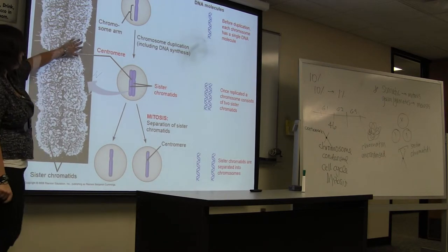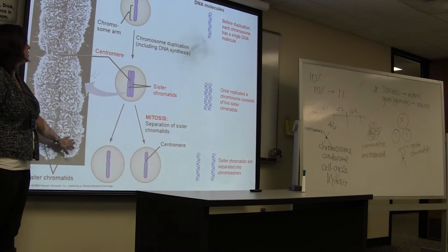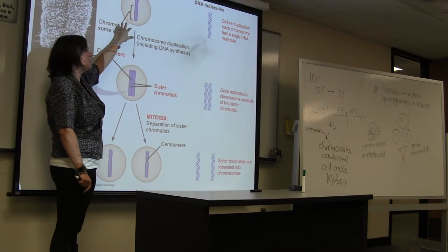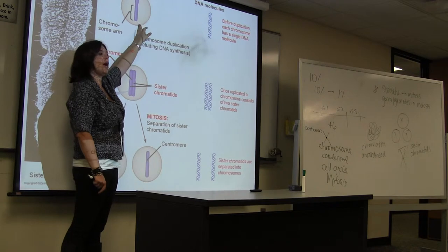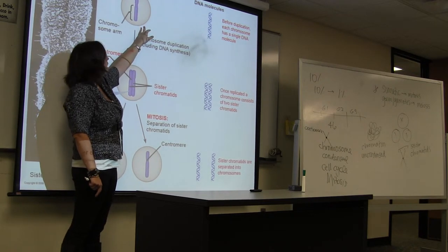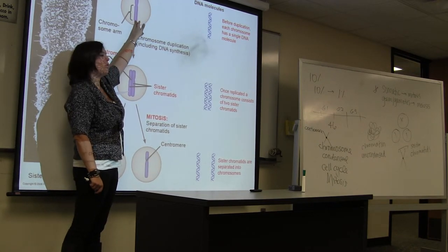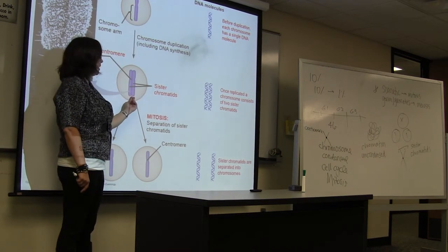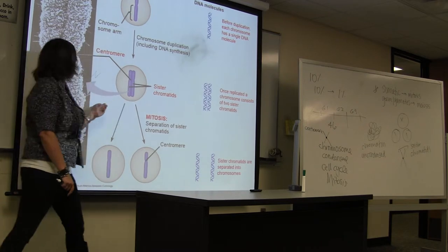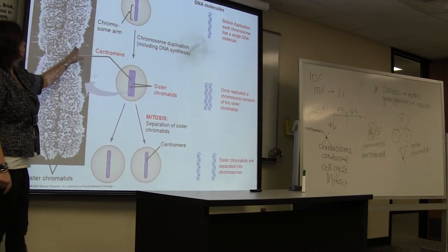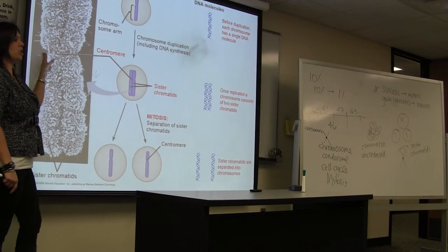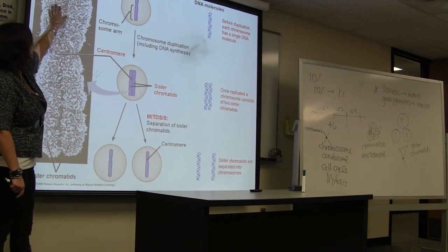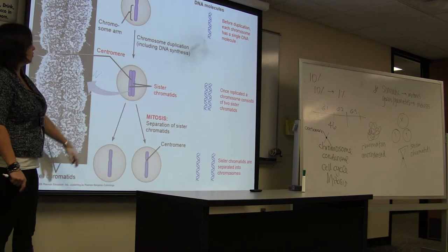Here are our sister chromatids. When we start off, before we go into the cell cycle, we only have one copy of each chromosome. After we undergo replication and make a copy of our DNA, that's what creates these sister chromatids. Those sister chromatids are going to be held together by a region of the chromosome called the centromere.